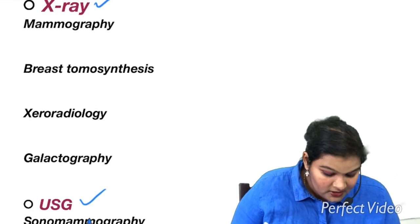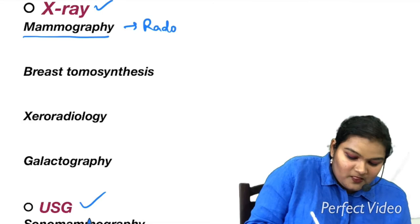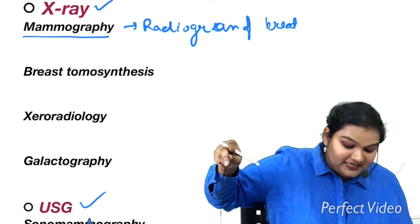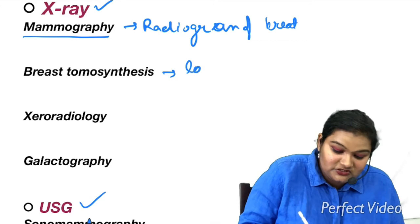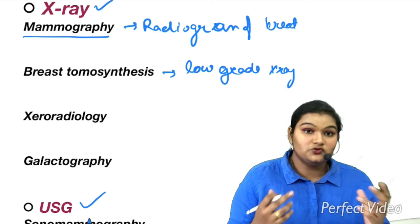Following are examples of breast imaging techniques which use x-ray as their radiation. The first one is mammography. Mammography is basically radiology, a radiogram of breast. It's just the x-ray of breast. Then we have breast tomosynthesis or digital breast tomosynthesis. It uses low-grade x-rays to get the volumetric reconstruction of a breast and is used for detecting cancer in early stages which is treatable.